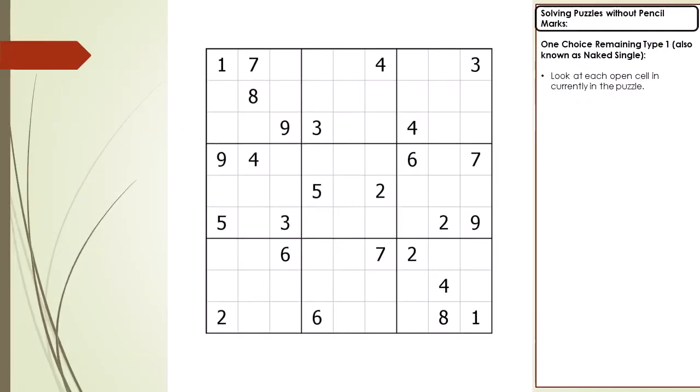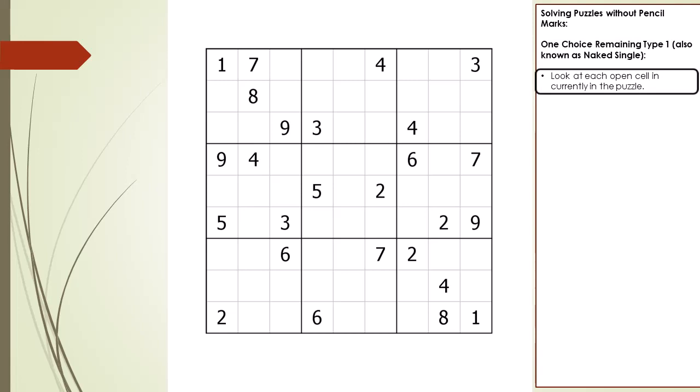Next we are going to talk about how to solve puzzles without pencil marks in more detail. I will use two puzzle solving techniques. The first is called One Choice Remaining Type 1, also known as the Naked Single puzzle solving technique. The algorithm is: look at each currently open cell in the puzzle from left to right, top to bottom.